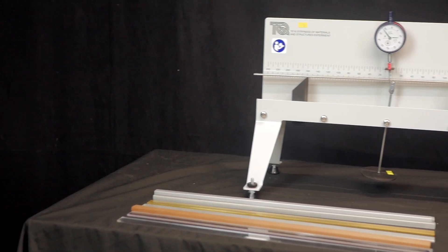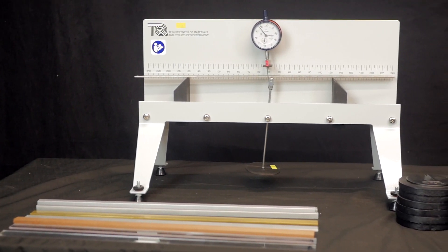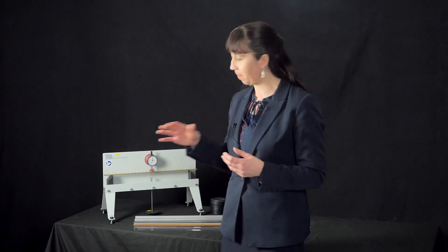Stiffness is an important property for many applications of materials. The stiffness of structure depends on both the properties of the materials from which it is made and the geometry of the structure. This experiment explores most of these variables using a very simple structure and experimentation with the different specimen beams supplied.